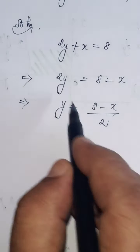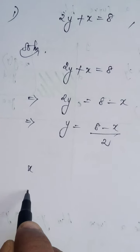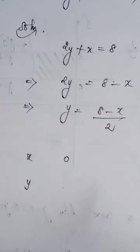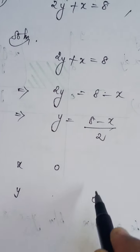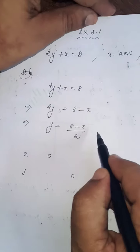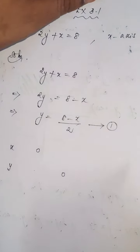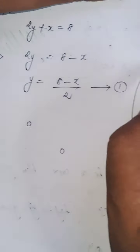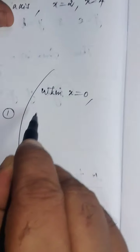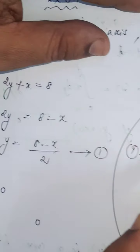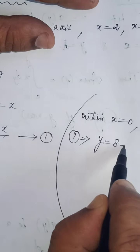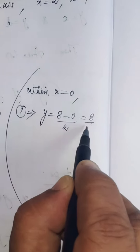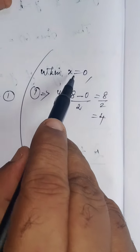Now we have to trace the curve — it's a straight line only. For x equal to zero, find the value of y, and when y equal to zero, find the value of x. Substituting x equal to zero into equation one: y equals (8 minus 0) divided by 2, which equals 4. So when x equals 0, y equals 4.